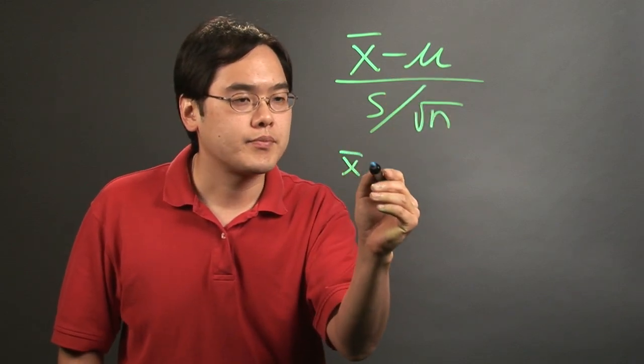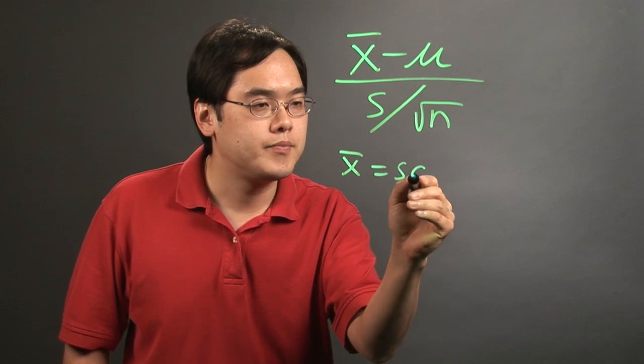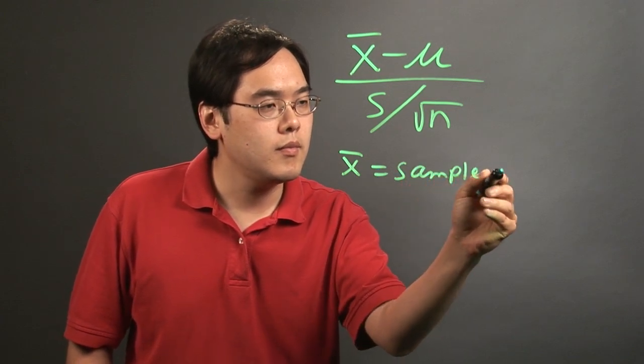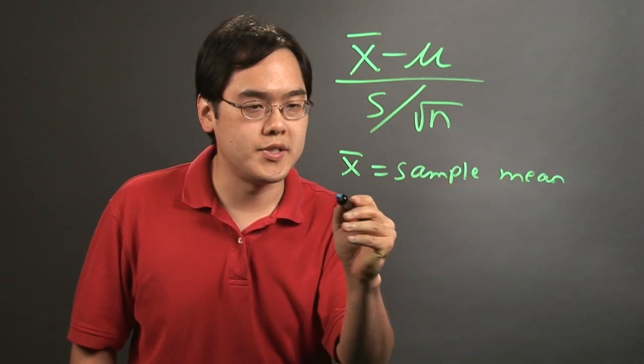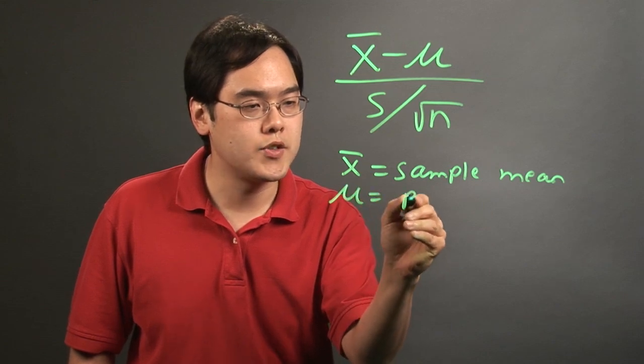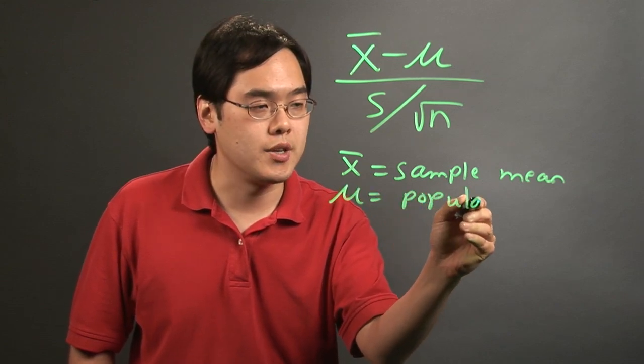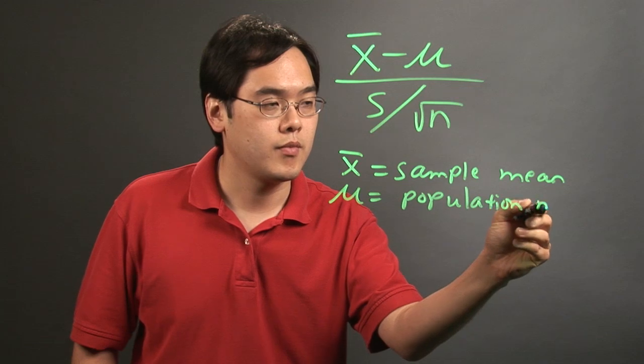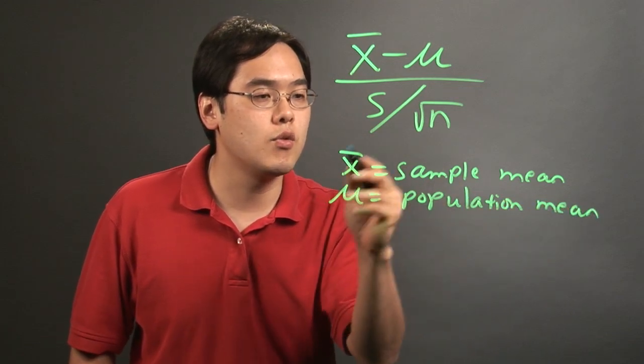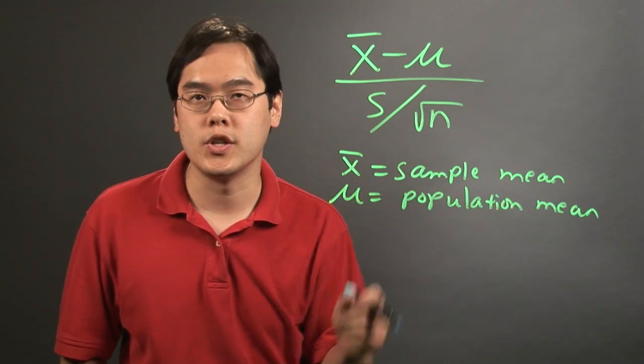Now the x bar is the sample mean, whereas the mu refers to the population mean. In statistics by now, I think you already have to determine the differences between these two definitions.